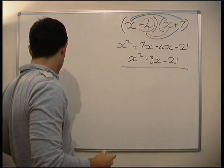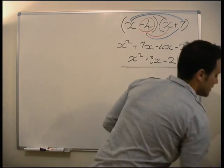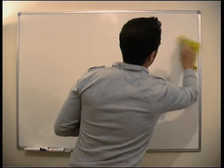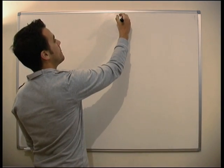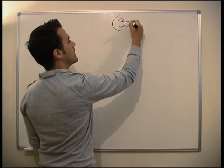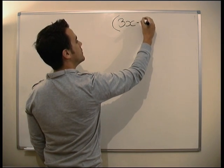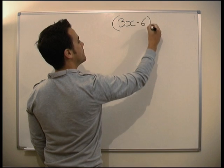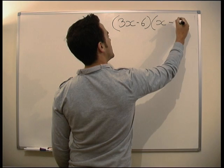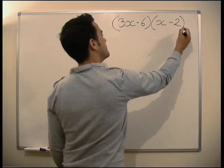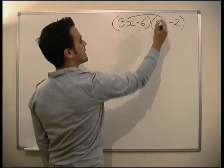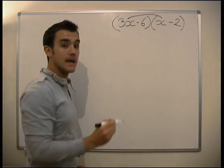We're going to do one more example with these, and then probably best you practice them by yourself. So this time we've got (3x - 6)(x - 2).